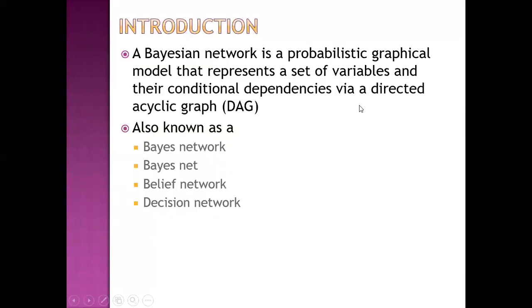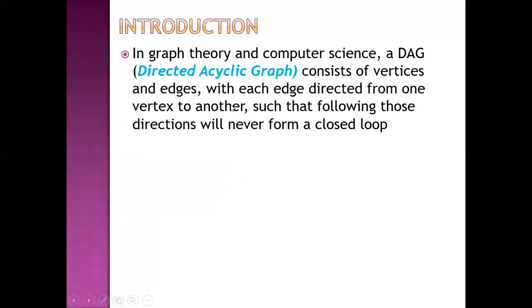A Bayesian network is a probabilistic graphical model that represents a set of variables and their conditional dependencies via a directed acyclic graph. It is also known as a belief network or decision network. A DAG consists of vertices and edges with each edge directed from one vertex to another such that following those directions will never form a closed loop — so it is acyclic, meaning there will be no loop.